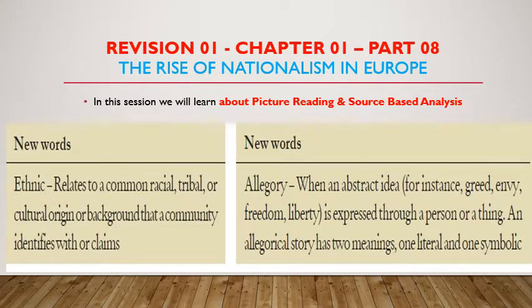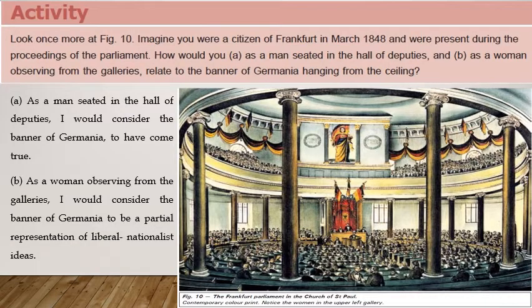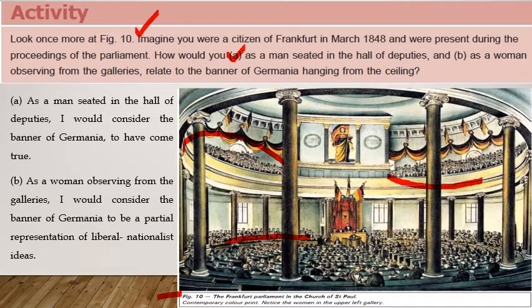Learn the terms as well as the description — this is important for one-mark questions. Now let us see Figure 10. Imagine you were a citizen of Frankfurt in March 1848 and were present during the proceedings of the parliament. How would you, as a man seated in the hall of deputies, and as a woman observing from the galleries, relate to the banner of Germania hanging from the ceiling?